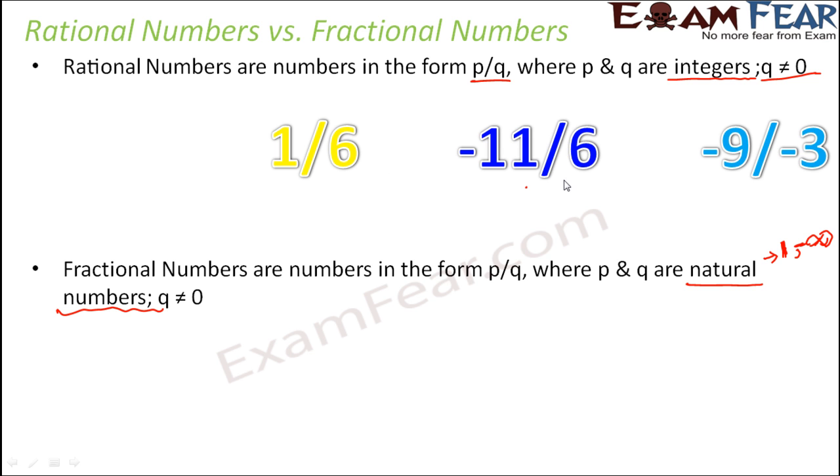When you look at the same example, which one do you think is a fractional number as well? All of these are rational numbers. This one is a fractional number because one and six are both natural numbers. But is this a fractional number? No, because minus eleven is an integer but not a natural number. Similarly, minus nine is not a natural number, and minus three is not a natural number.